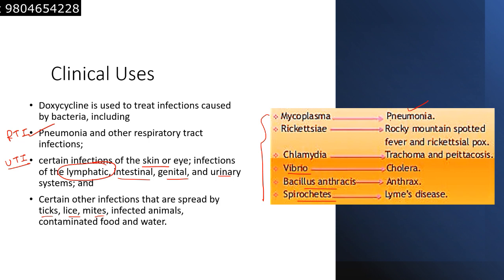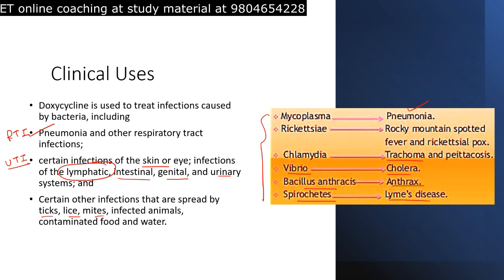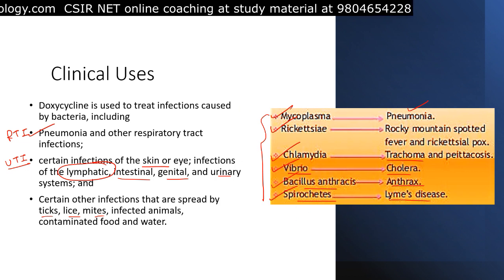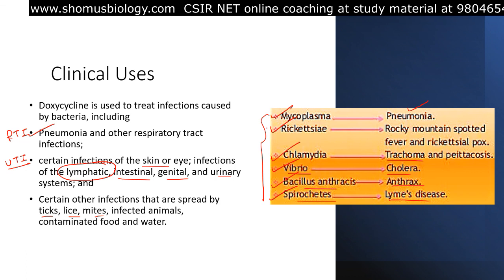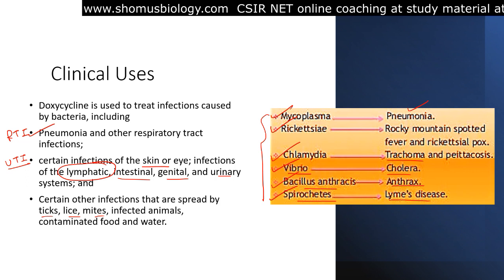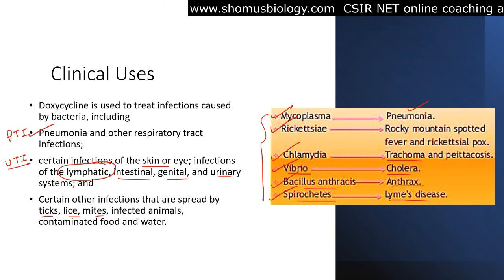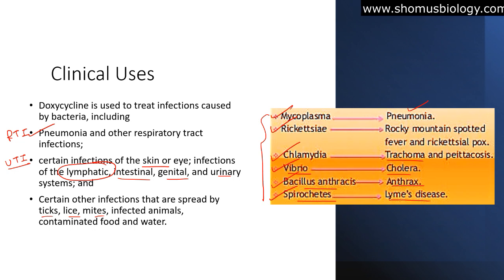Mycoplasma causes pneumonia; Rickettsia causes Rocky Mountain spotted fever; Chlamydia causes trachoma; Vibrio cholerae causes cholera; Bacillus anthracis causes anthrax; and spirochetes cause Lyme disease. Doxycycline acts against all these agents, killing them and restricting their growth by inhibiting the protein synthesis machinery. It also inhibits collagenase activity — microorganisms use collagenase to degrade collagen, the structural tissue protein, and this destruction aids their colonization in body tissues.